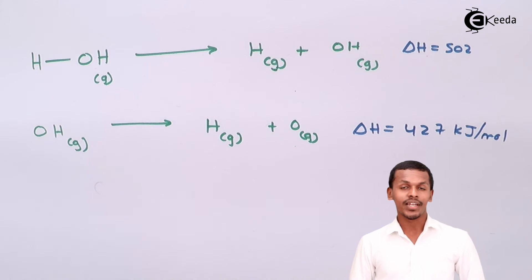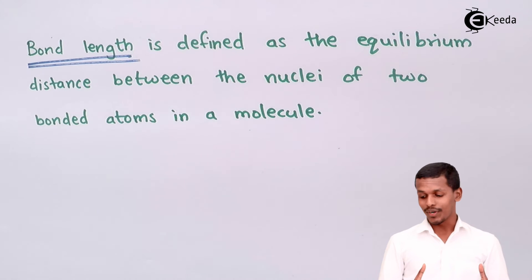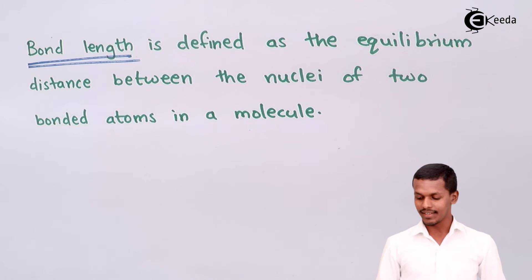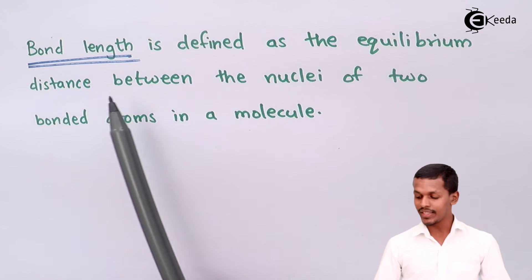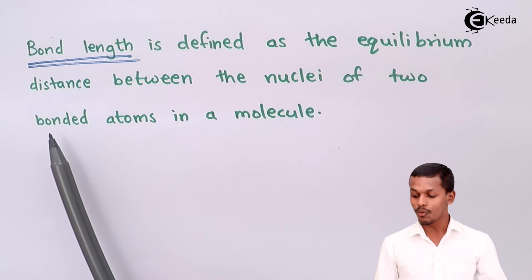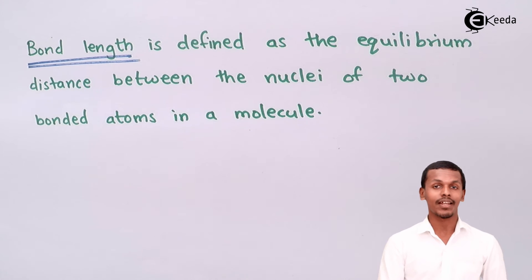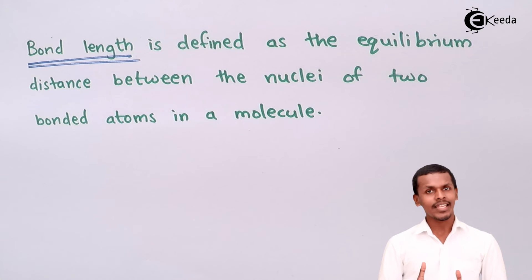That was bond energy, the first parameter. Now let us talk about the next one: bond length. Bond length is defined as the equilibrium distance between the nuclei of the two bonded atoms in a molecule — essentially the distance between the two nuclei of atoms forming a bond.